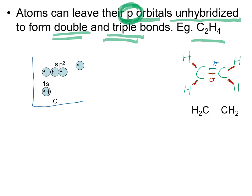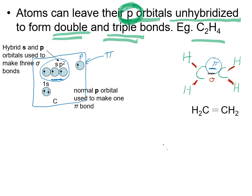Carbon's hybridized energy level diagram for C₂H₄ shows sp² hybridization: we take the s orbital and two of the p orbitals, lowering them to the sp² subshell. The third p orbital is left unhybridized because we're going to use it to make the pi bond. If we were forming four single bonds we would have hybridized that p orbital too, but instead we leave it as an unhybridized p orbital specifically to form the pi bond between the two carbons.